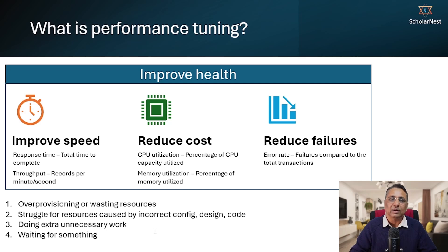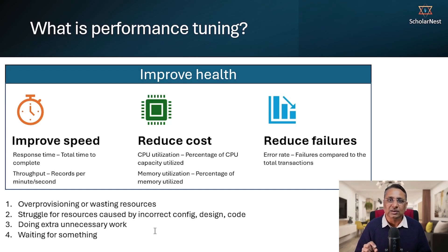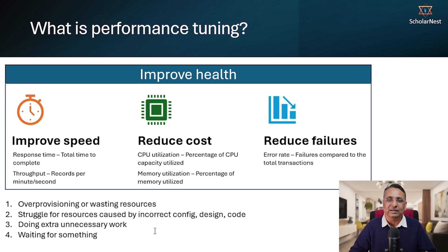Another health problem is doing extra or unnecessary work. For example, if your Spark job is processing data but the average partition size is much larger than the memory given to process each partition, Spark will spill that data to disk. In that process, Spark takes data from memory, saves it to disk, processes part of the partition, then brings data back from disk to memory — moving data memory to disk, disk to memory, repeatedly. All of that is unnecessary work and a health-related problem. Fix the health and Spark will stop doing unnecessary work, improving performance speed and potentially reducing resource cost.